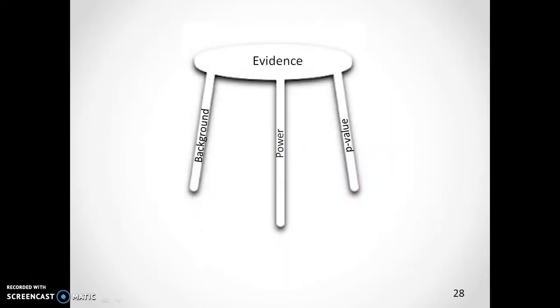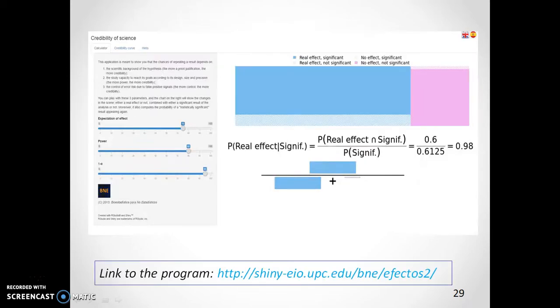Let us now quantify the influence of each leg by using a visual program that our UPC colleagues have developed. The left column indicates the real effects, while the right indicates those that are false. In this first example, the previous expectation of the effect is high, 75%. Therefore, the left column is thick. Additionally, the top of the chart shows statistically significant results, while the bottom shows those which are not. Because the power is high, 80%, most of the results in the first column are significant. And since the p-value is small, most of the results, 95%, in the right column of bad ideas are non-significant.